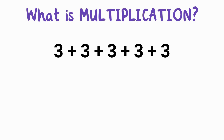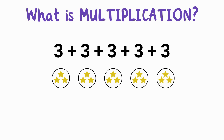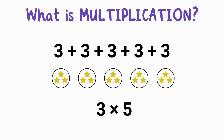For example, if you need to add three five times, you could write it like this: three plus three plus three plus three plus three. Instead of adding three over and over again, we can simplify our work by using multiplication. What you're really doing is adding three five times — that's where multiplication comes in. So instead we can write three times five. Both give us the same answer, 15, but multiplication makes it faster and easier.